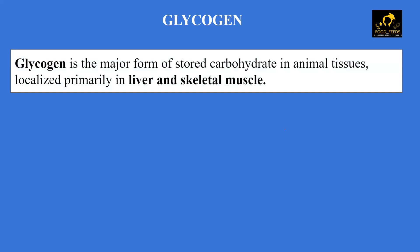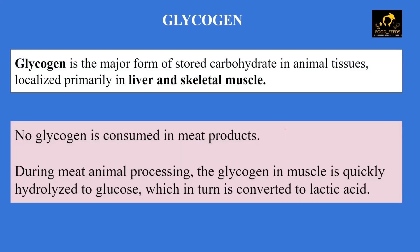The glucose units within glycogen serve as a readily available energy source for the body. Although glycogen is stored in muscles, when you consume any meat product, there is no glycogen present — because during meat and animal processing, the glycogen in the muscle immediately hydrolyzes to glucose, which is then converted into lactic acid. So when we consume a meat product, it is already in lactic acid form.